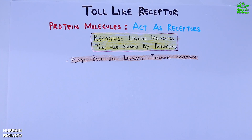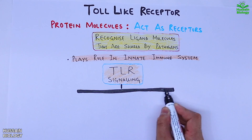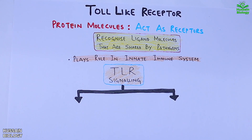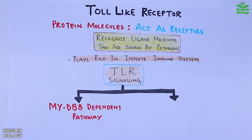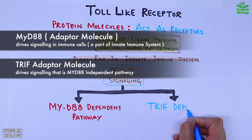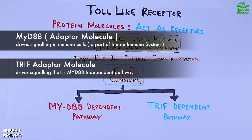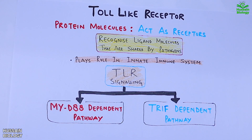Before getting to its structure and types, these TLR proteins drive two different signaling pathways. The first pathway of TLR signaling is the MYD88-dependent pathway. MYD88 is a downstream adaptor molecule in signaling. The second one is the TRIF-dependent pathway, which is mediated by the TRIF adapter protein. Both of these pathways will be discussed in separate videos.